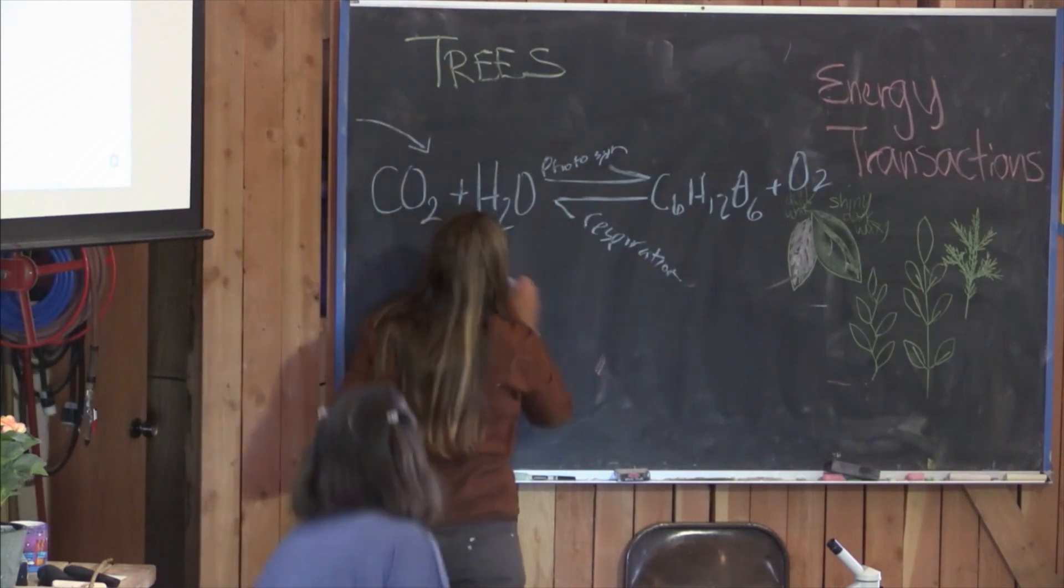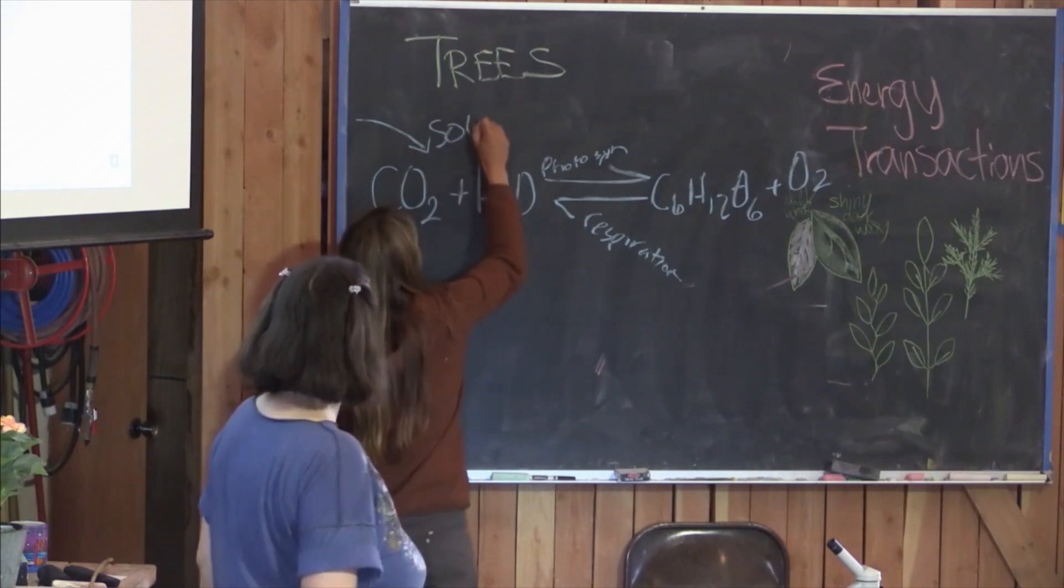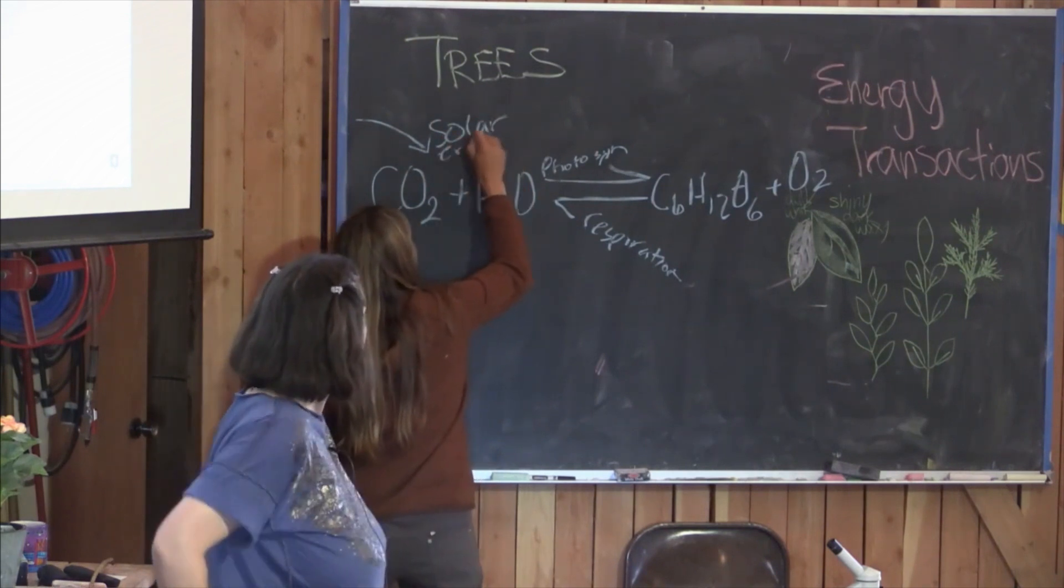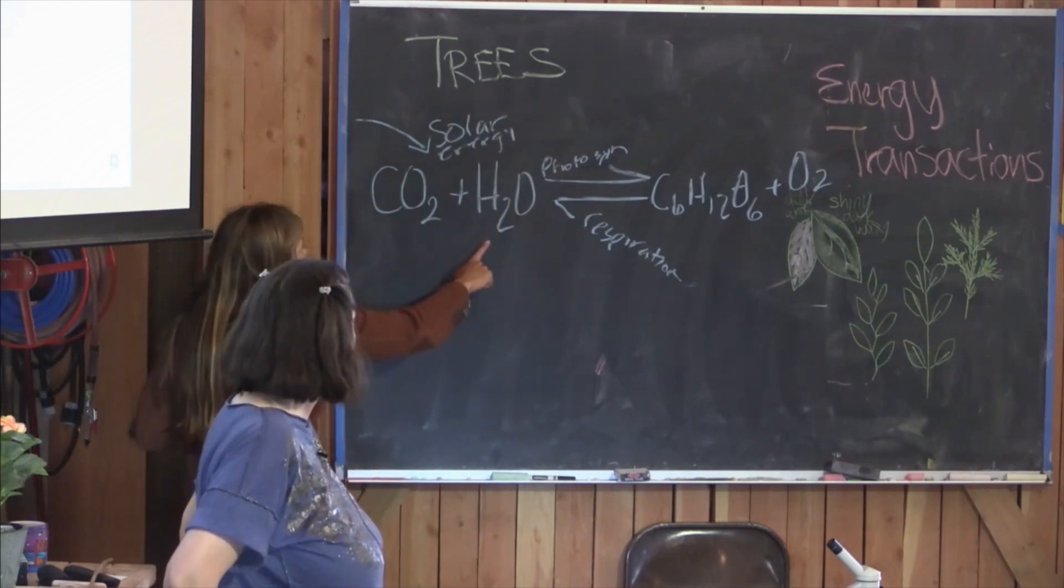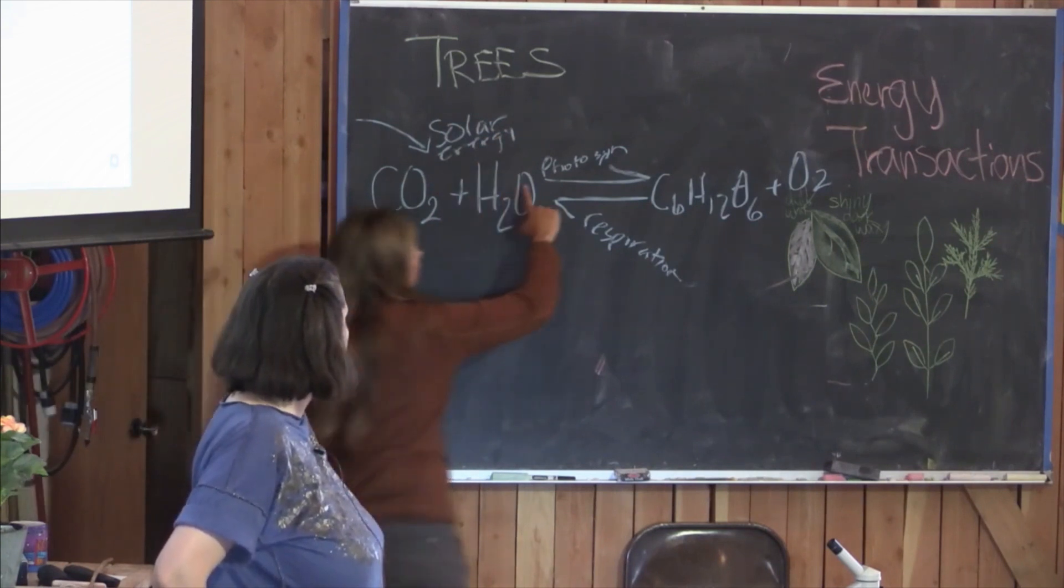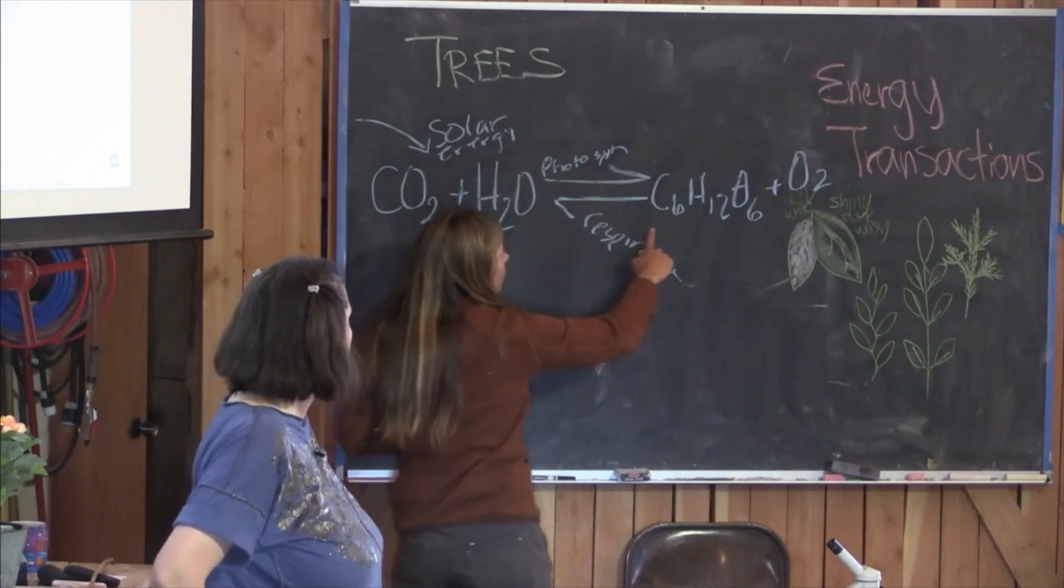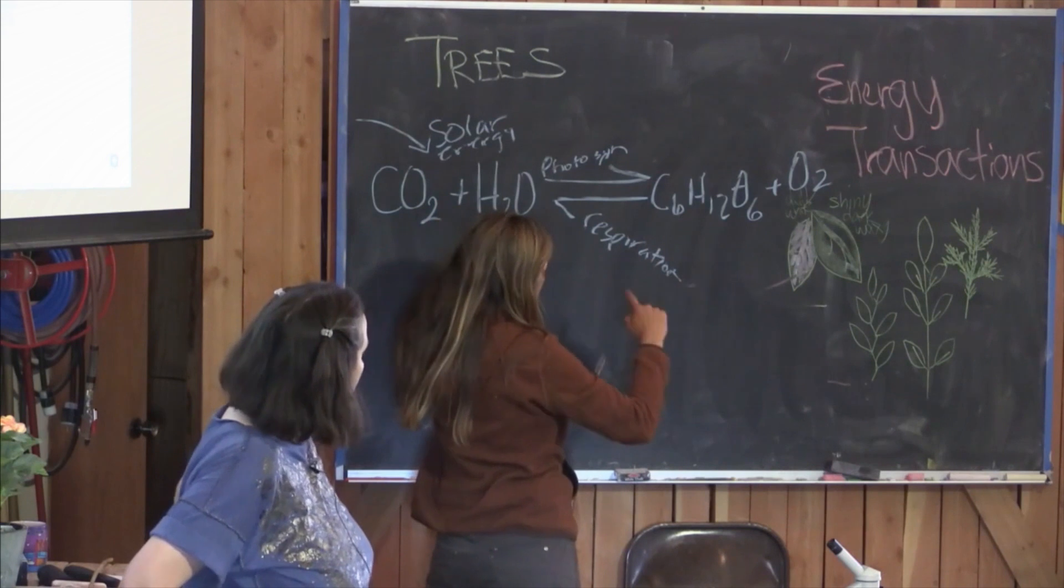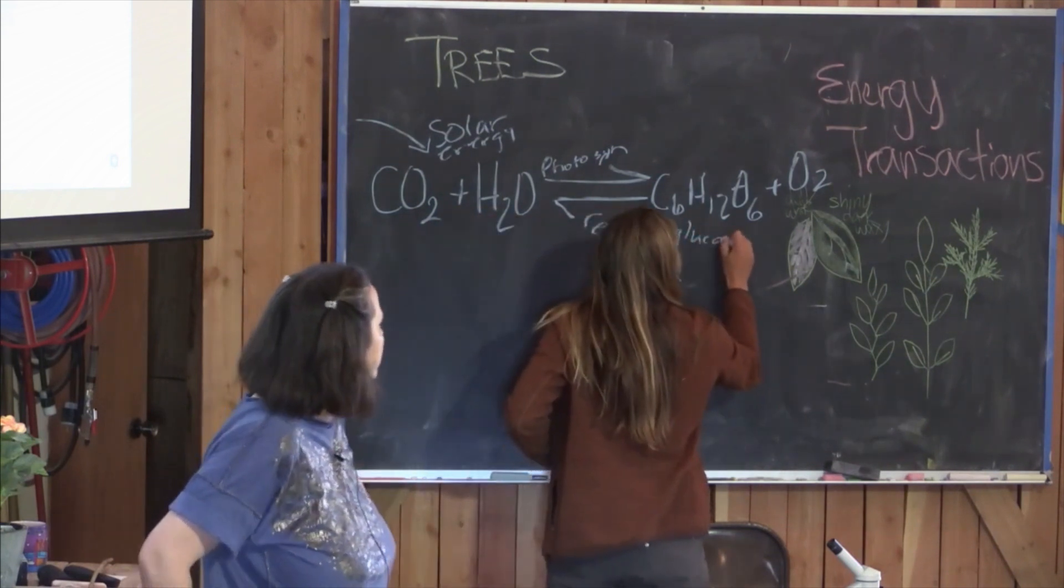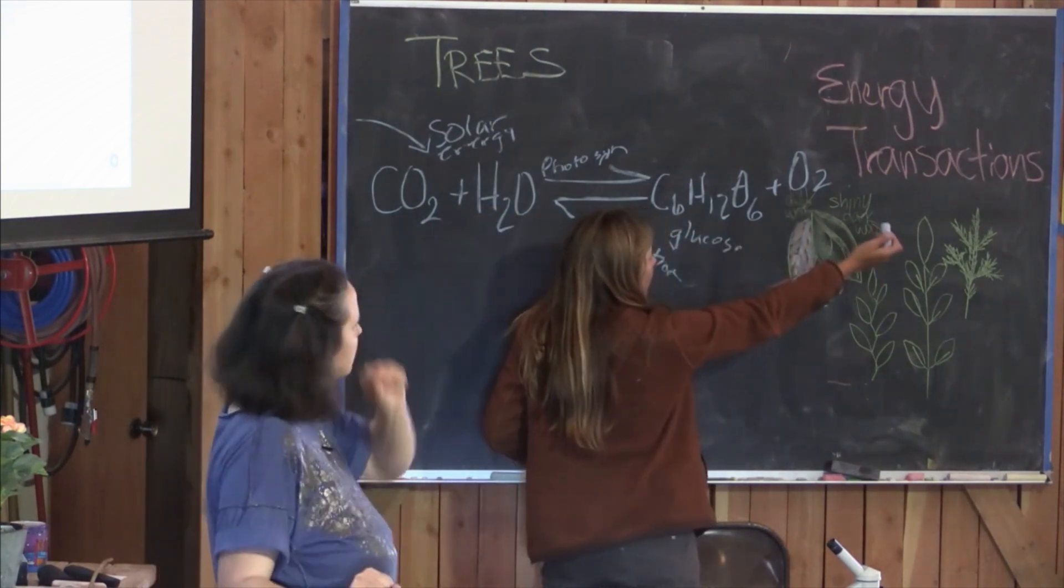Yeah. So trees are going to photosynthesize because they have the solar energy input. They need that energy. And then when that solar energy combines with them taking up carbon dioxide and a bunch of water, they do photosynthesis and they create sugar. C6H12O6 is the general sugar, simple sugar. There's a lot of simple sugars with that formula. And oxygen, they give off oxygen.